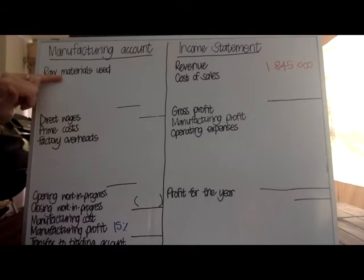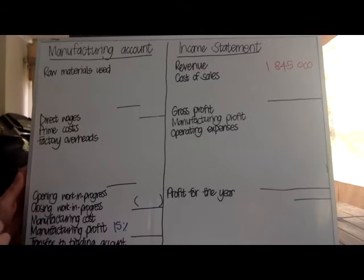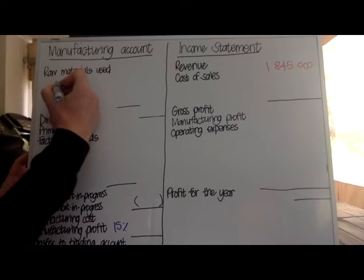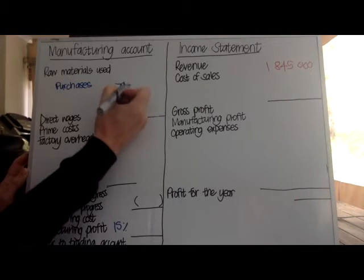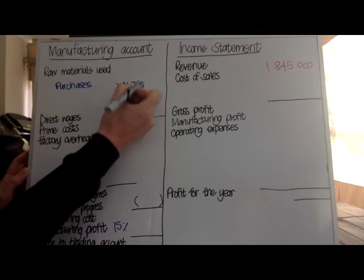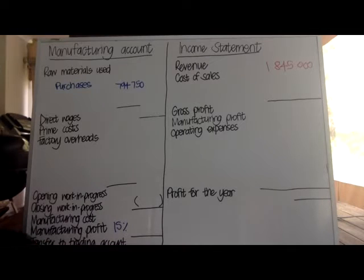I've left a space for opening stock because generally you will have to calculate it quite carefully. You can leave a line for opening stock, or work from the top down and put opening stock later. My purchases slot in here with the amount of 794,750. I'm using the two-column method — the first column for all my calculations and the second column for all the totals, which makes it easier to remember what I'm doing.